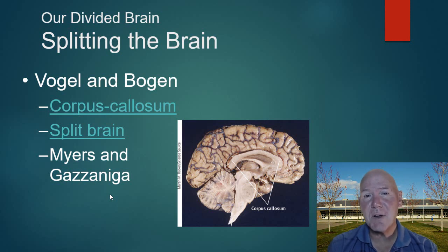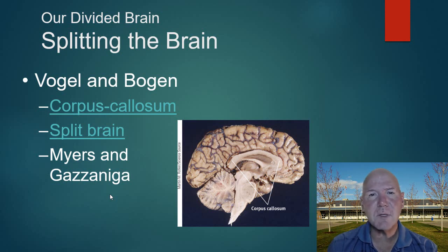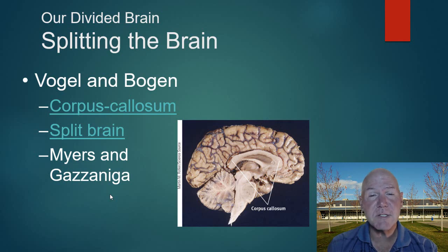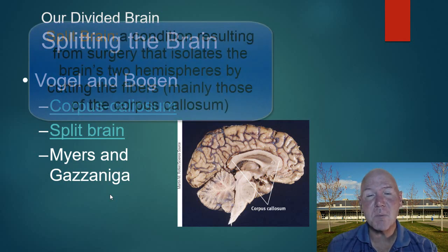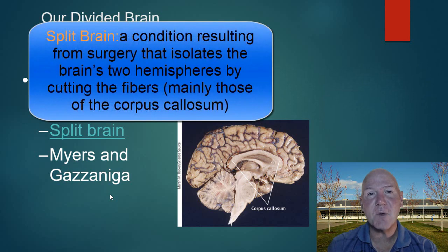One theory about severe epileptic seizures is that the messaging traveling between the two hemispheres collides and causes problems, triggering seizures. One solution was actually to cut the brain at the corpus callosum, separating the left and right hemispheres.